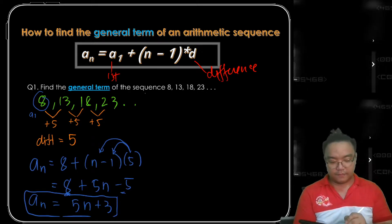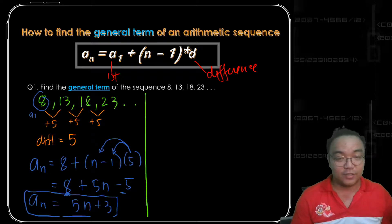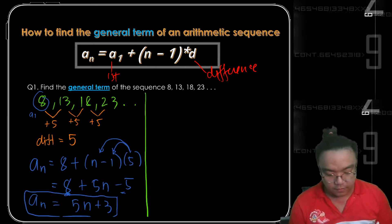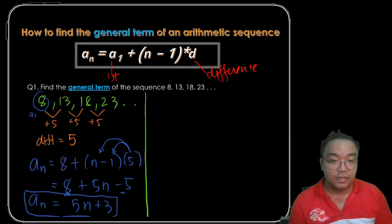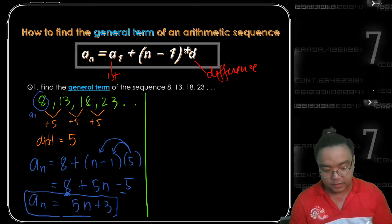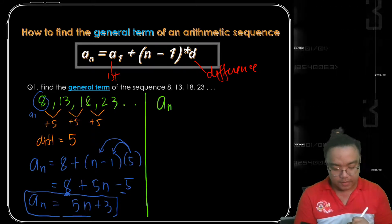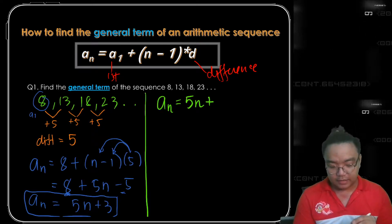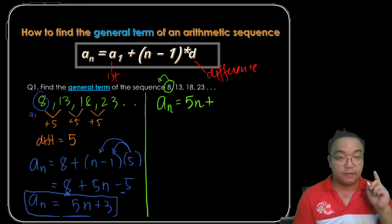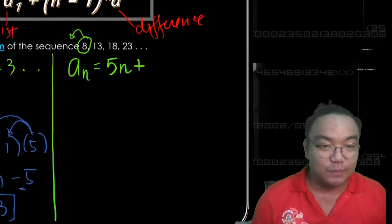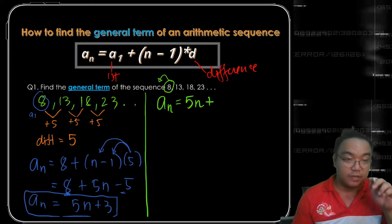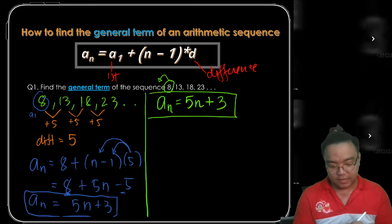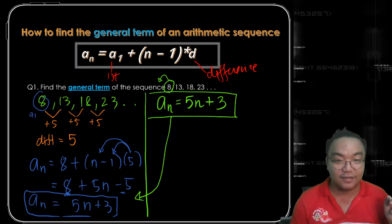That's how to find the general term of an arithmetic sequence, but there is a shortcut — a pattern we can apply to find the general term easily. Analyze the pattern of the sequence 8, 13, 18, 23, which differs by 5. To write the general term, write a sub n equals the common difference times n, then find the term before the first term. Since we increase by 5 to get the next term, the term before 8 is 3, and you get the same general term.